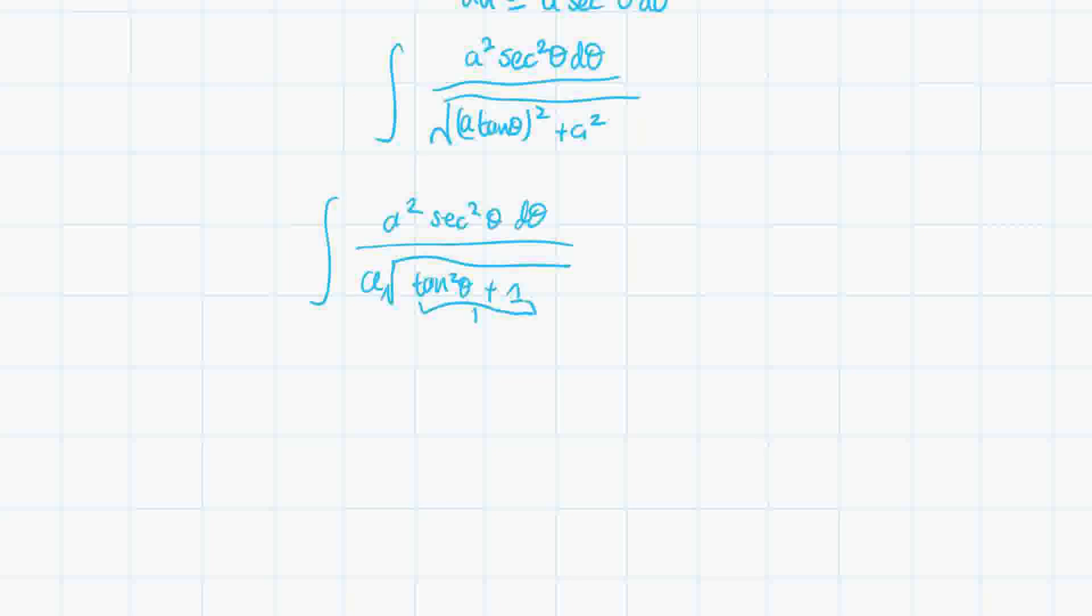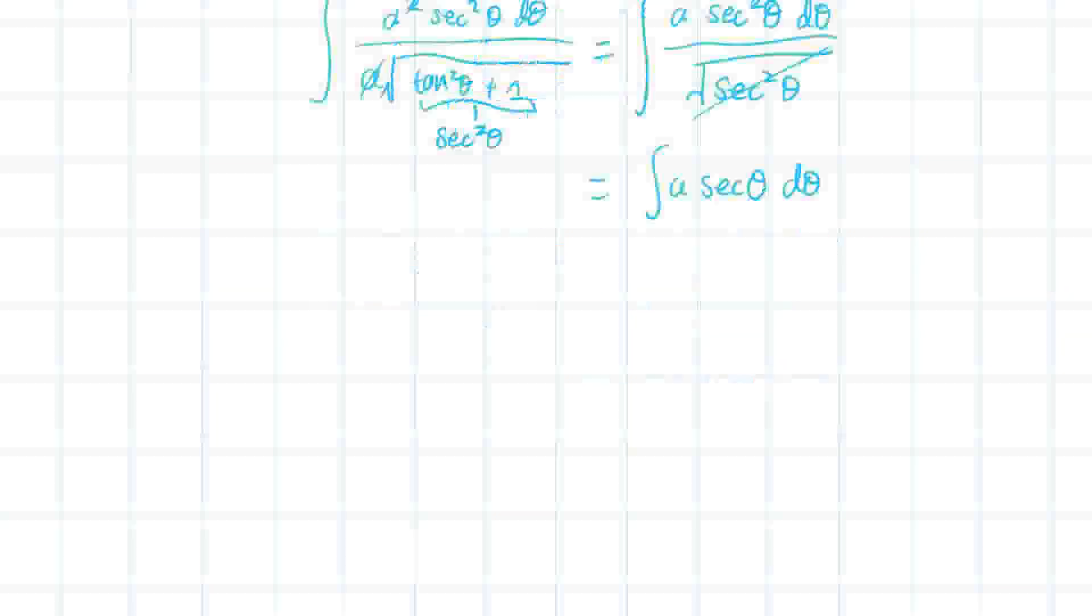And this, as you know from a trig identity, is just secant squared theta. And so now that will equal the integral of a. We cancel out one of the a times the secant squared theta d theta divided by the square root of secant squared theta. Now we can cancel out one of the secant theta, and we are left with the integral of a secant theta d theta.